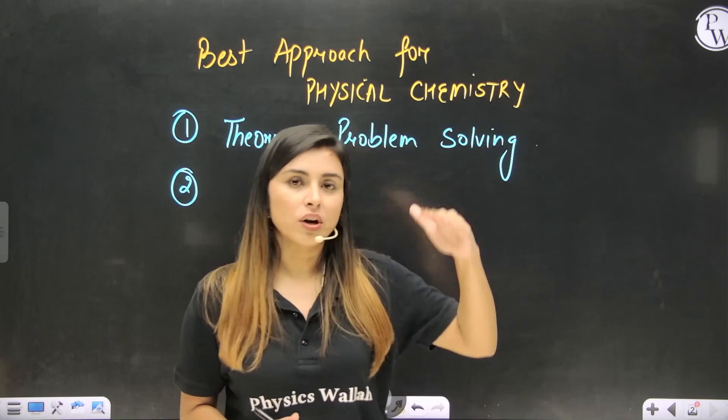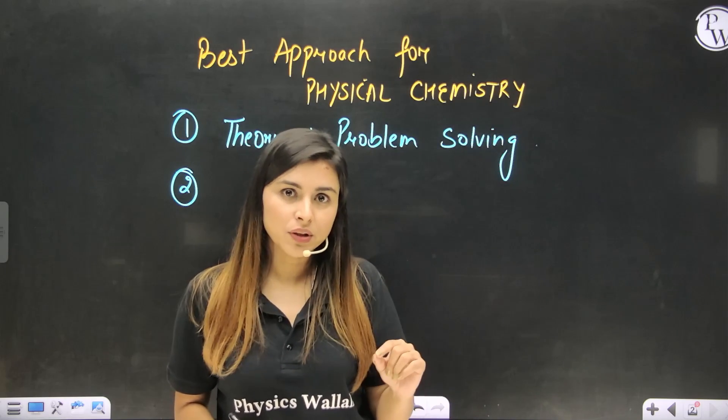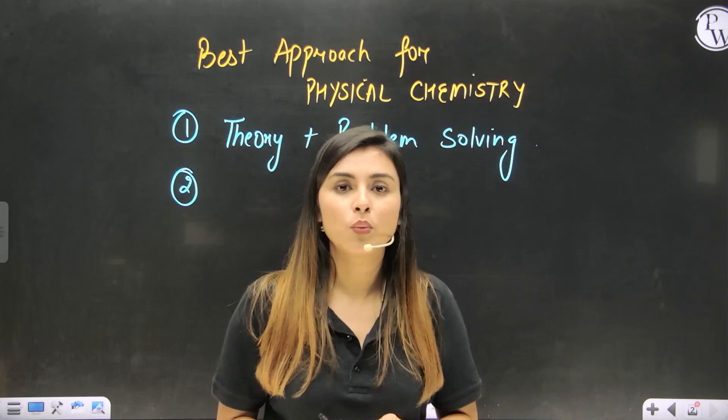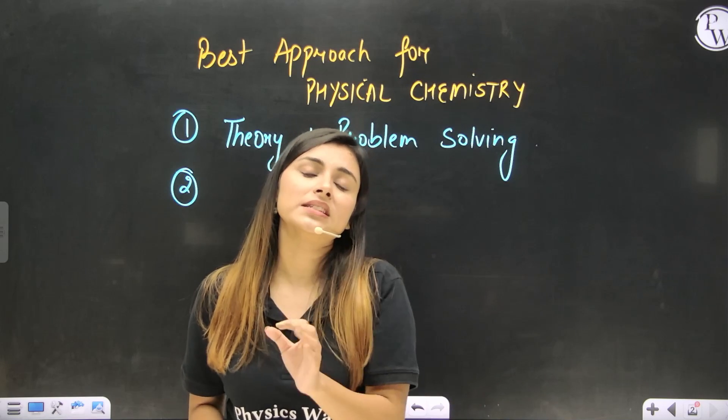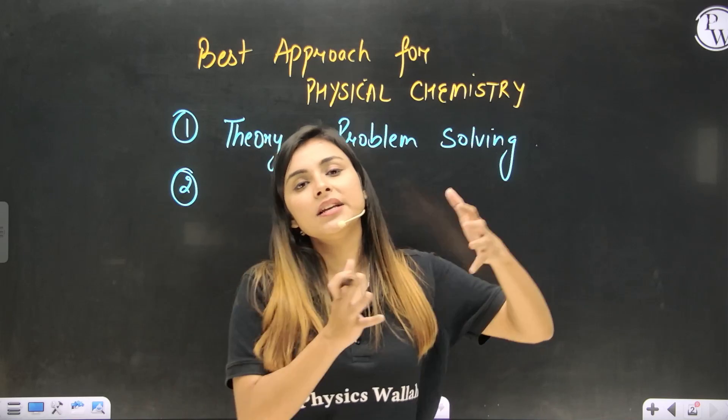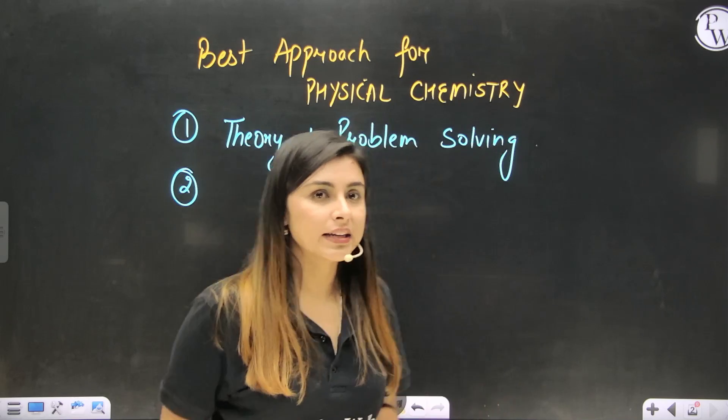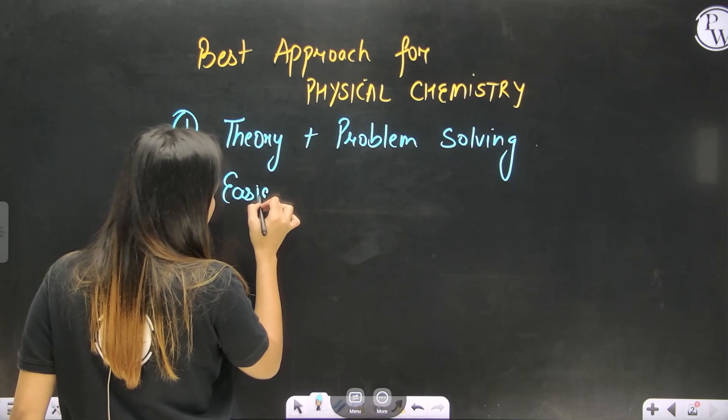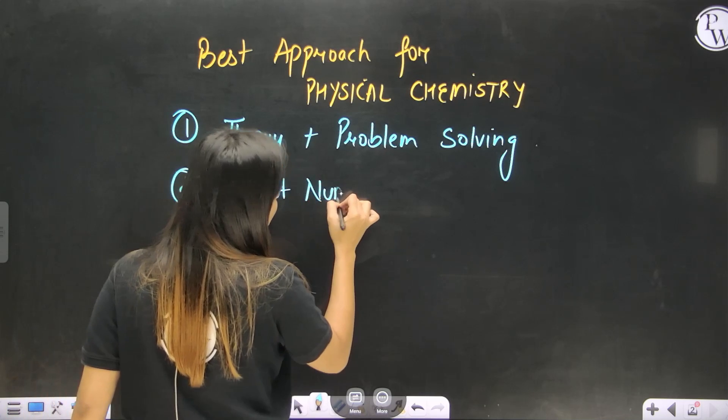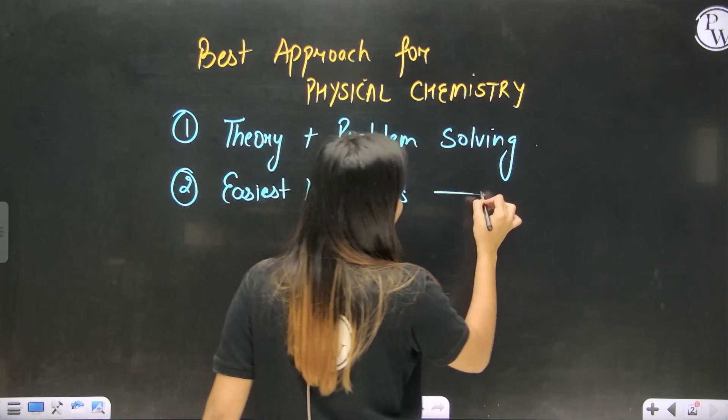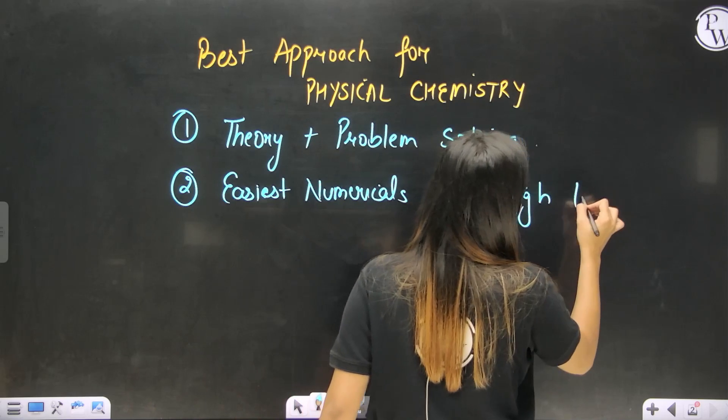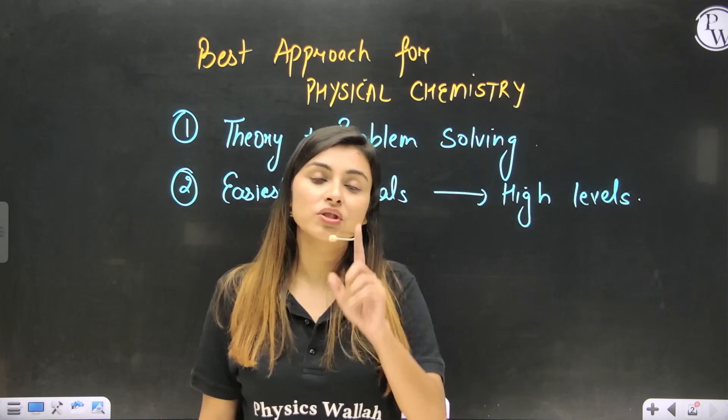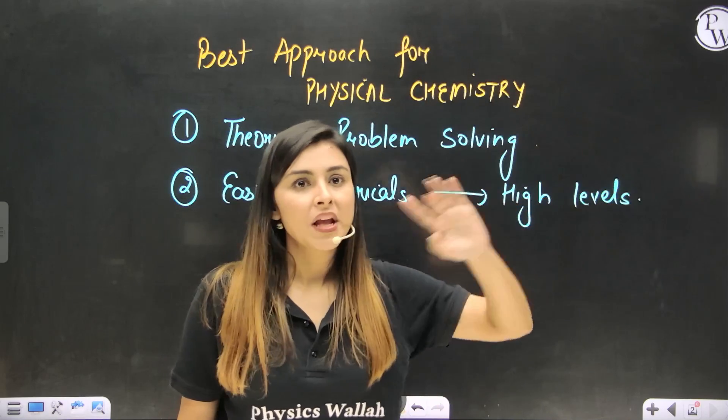Whenever you go on a staircase, you first start from the lowest stair and then reach the highest. That is the best way. What I want to tell you is that you should start solving numericals from the easiest, then move to the hardest level. So from easiest numericals to high level numericals. Never ever take this approach that you have to go directly to the highest level.